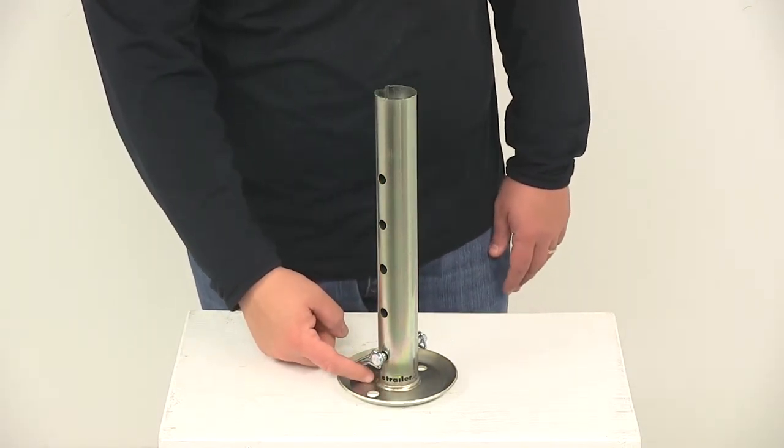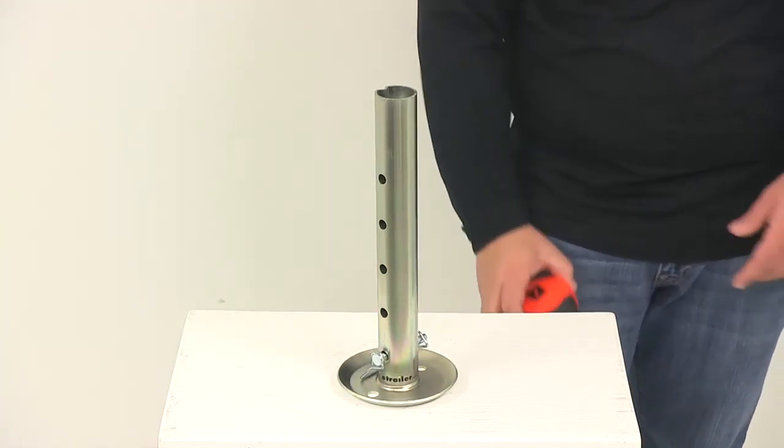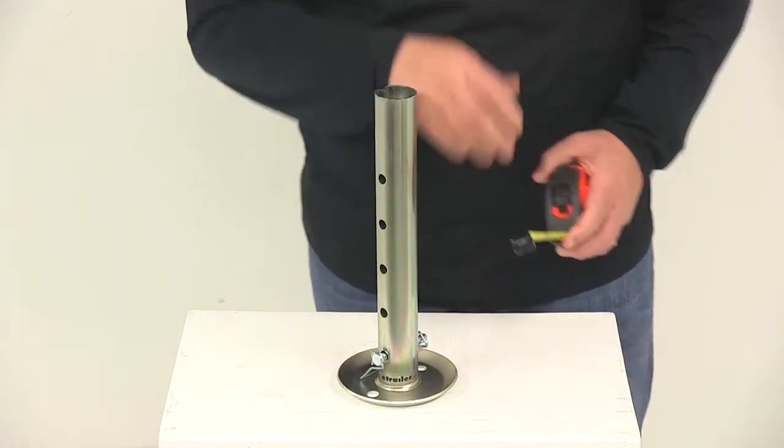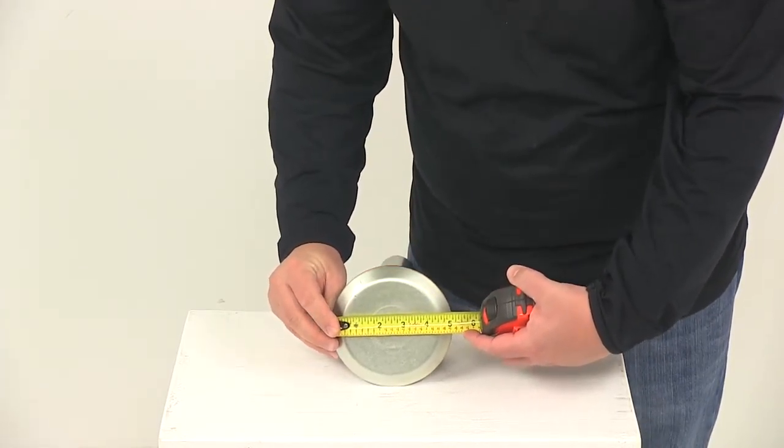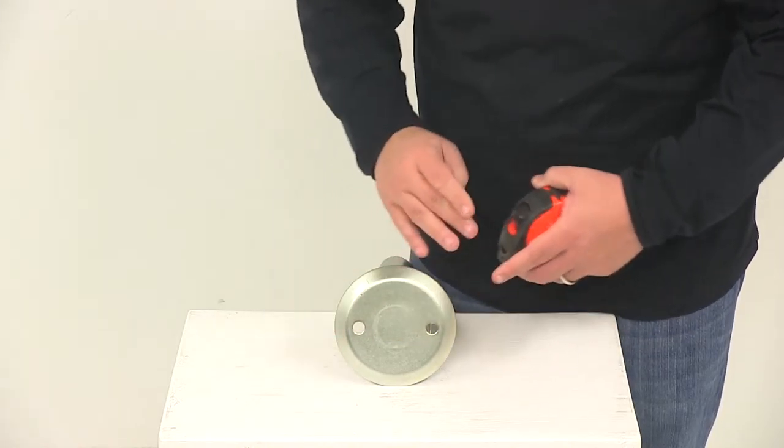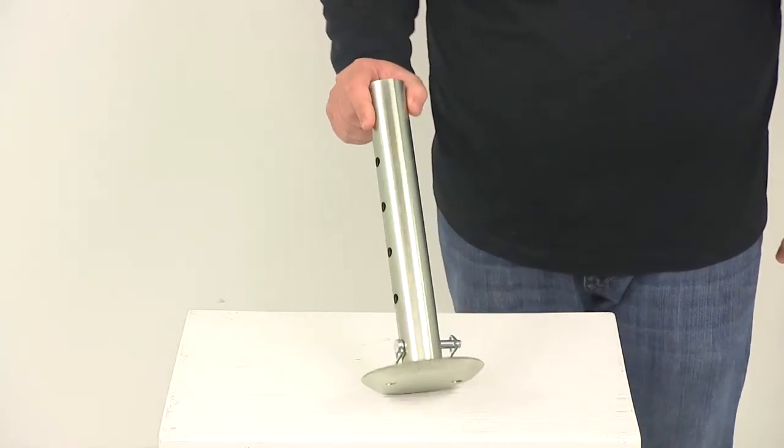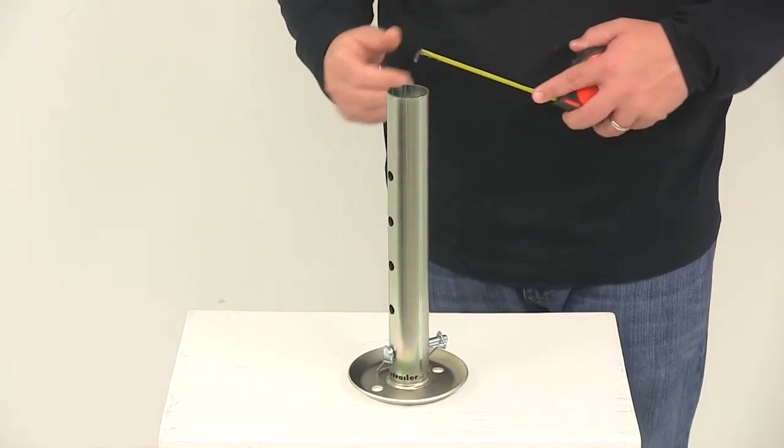The foot plate is welded onto the bottom of the tube. If we take a measurement of the diameter of the foot plate, we can see that's going to give us a measurement of five and one quarter inches. So it does a great job at spreading out the applied weight, especially on softer ground, to help prevent sinking. It also increases overall stability.